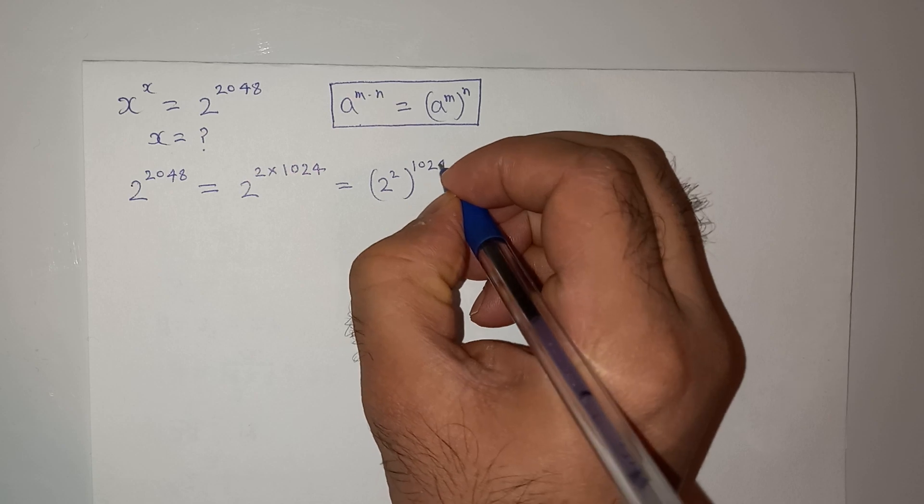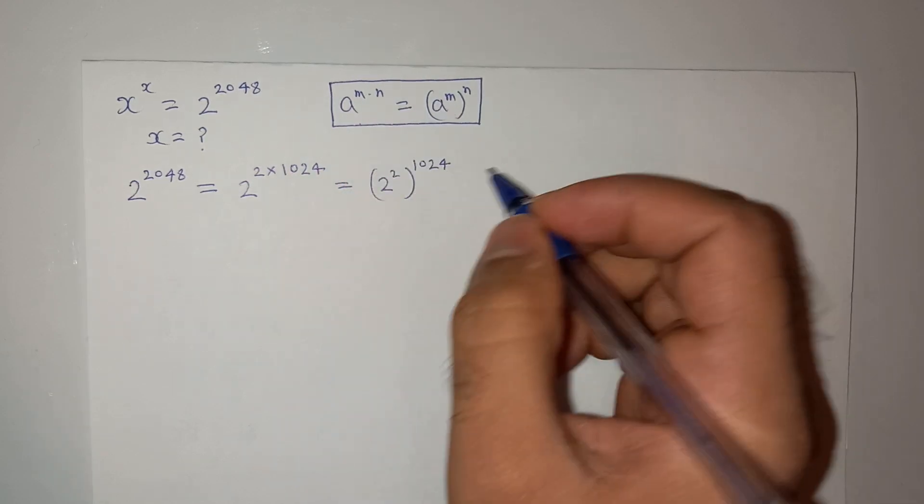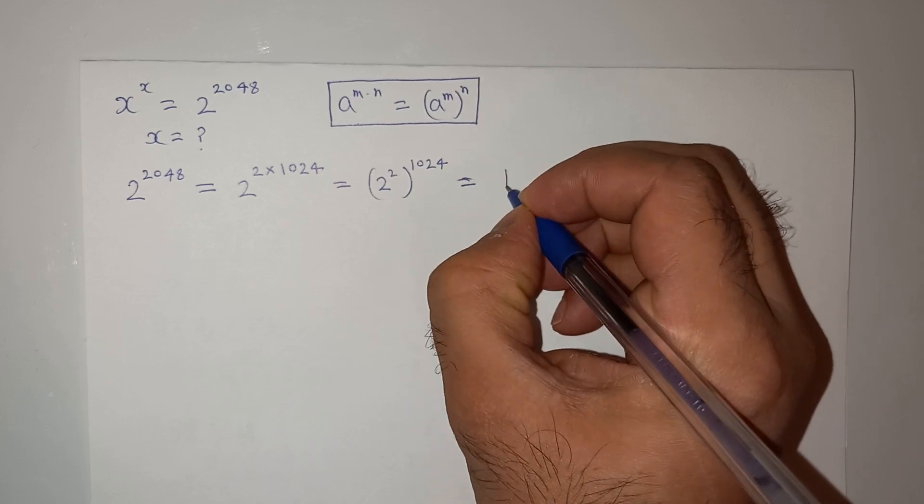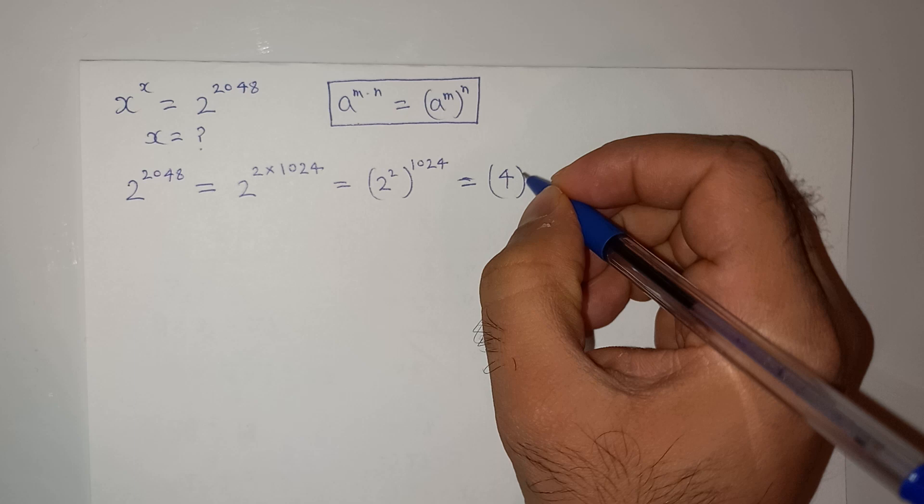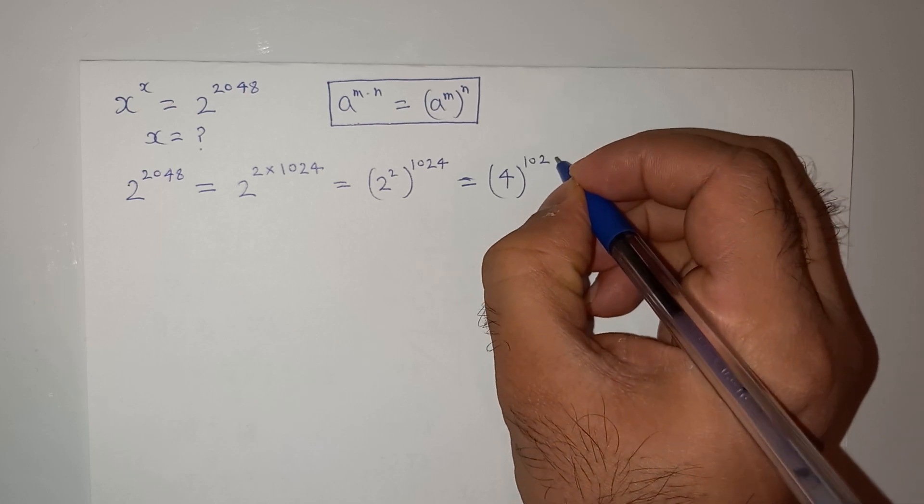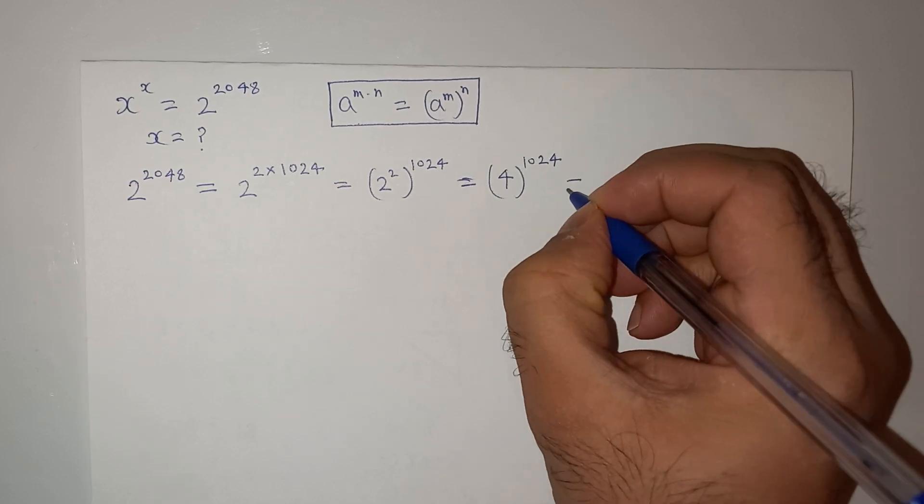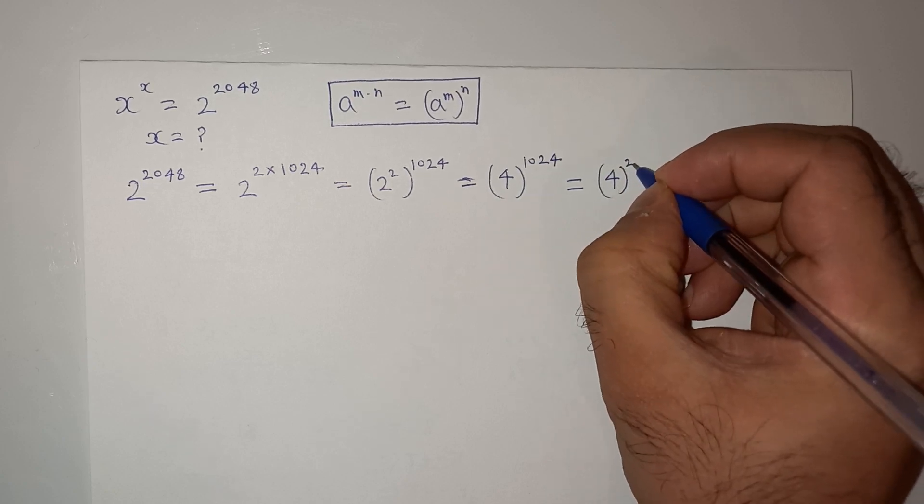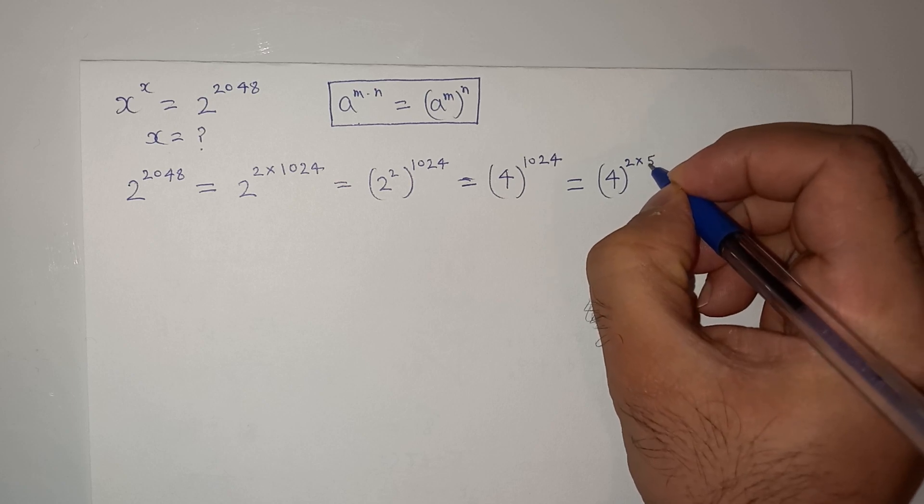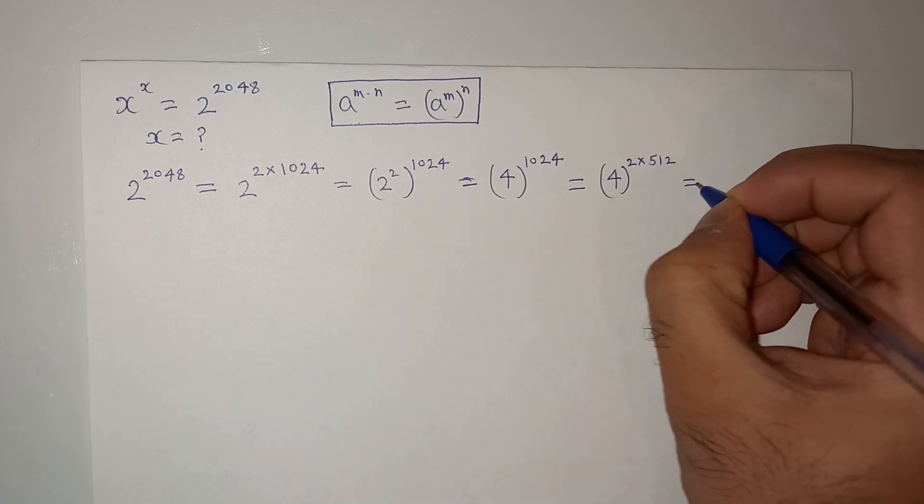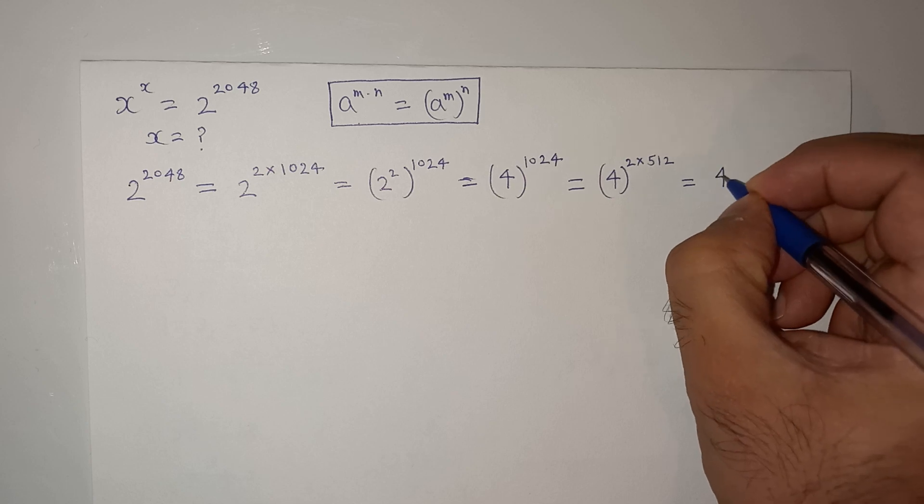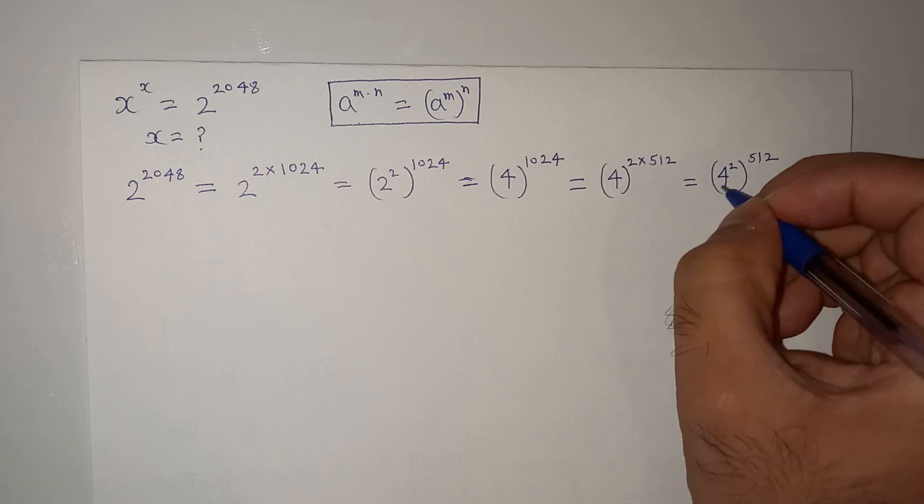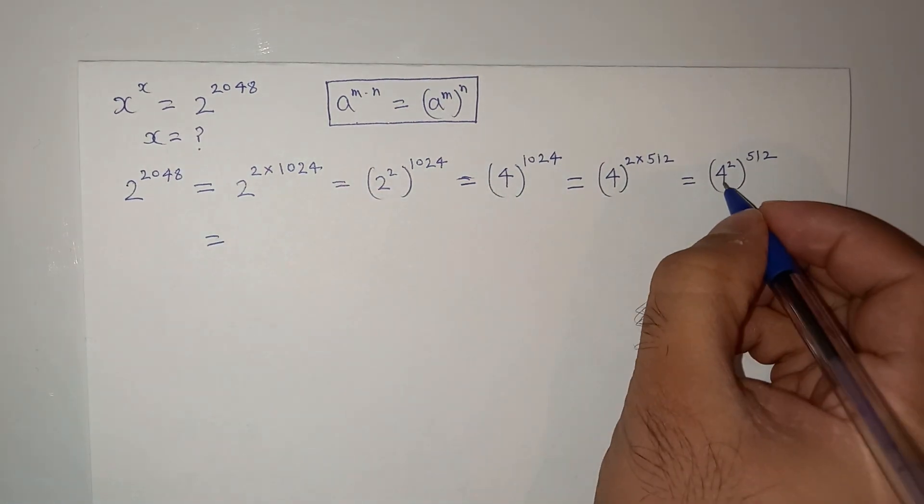Further, this will be 4^(2×512), so this will be (4^2)^512. Let me write this here. So 4^2 is 16, power 512.